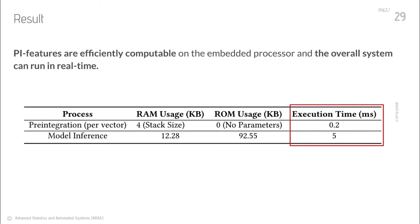We implemented both the pre-integration calculator and the CNN model for an ARM Cortex-M4 microcontroller. We used the Keras framework to define and train our model and then exported it to STM32CubeAI to translate it into compatible binaries. Based on our experiments, one full inference of a 2-second motion interval takes 5 milliseconds to execute. Furthermore, computing each PI feature took only 0.2 milliseconds, summing up to 4 milliseconds for a full 2-second batch of raw IMU data. This overall 9-millisecond execution time is well below the maximum computation time tolerable for real-time execution.